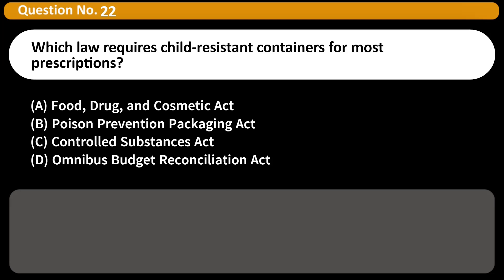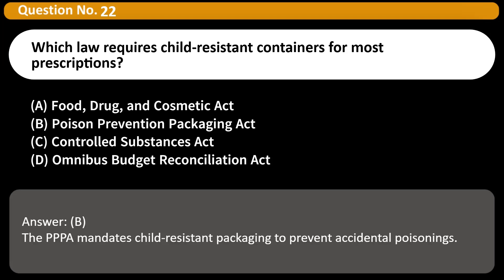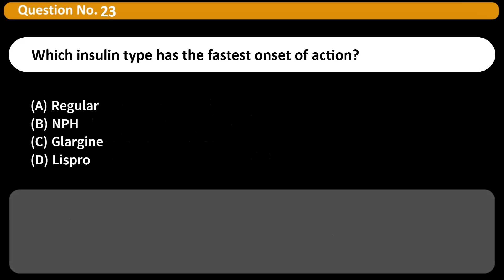Which law requires child-resistant containers for most prescriptions? A. Food, Drug, and Cosmetic Act. B. Poison Prevention Packaging Act. C. Controlled Substances Act. D. Omnibus Budget Reconciliation Act. Answer: B. The PPPA mandates child-resistant packaging to prevent accidental poisonings.